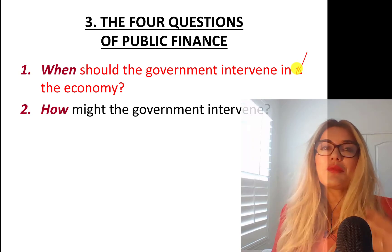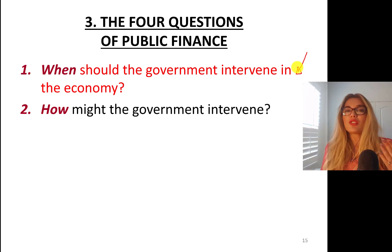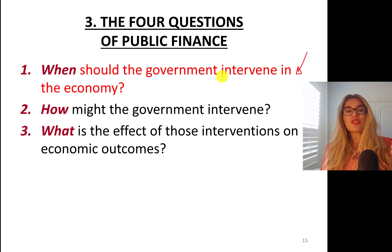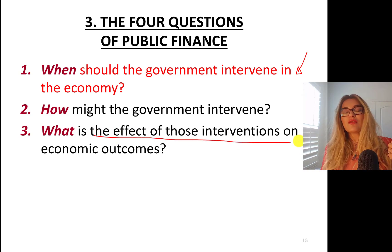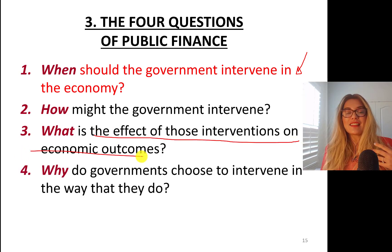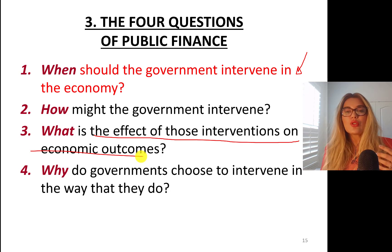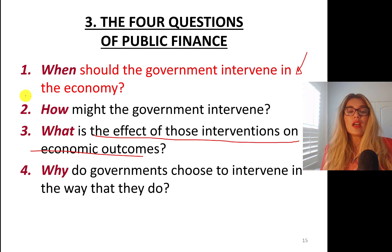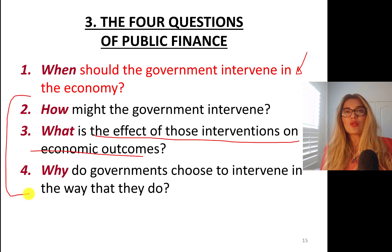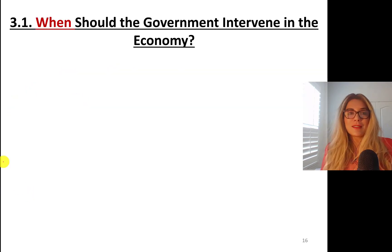Second question: how might the government intervene? What tools does the government have? The third question is: what's the effect of these interventions on economic outcomes? And the last one is: why do governments choose to intervene in the way that they do? Questions two, three, and four will be in the next part.